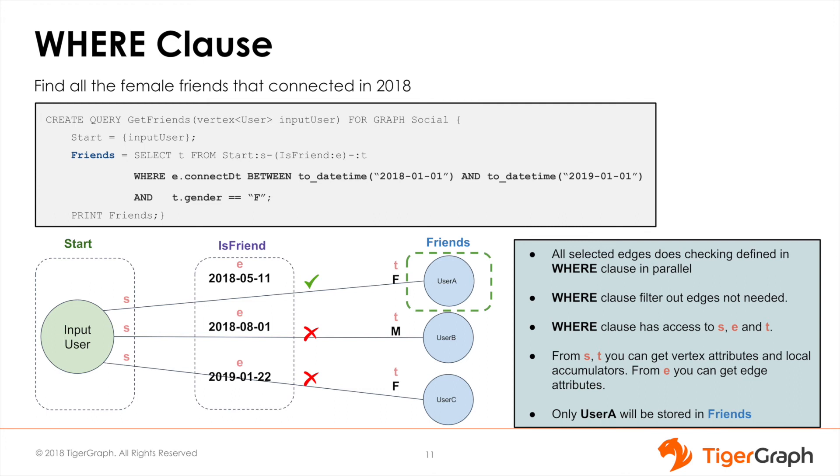Since the WHERE clause works on each selected edge, it has access not only to the edges but also the source and target vertices. Here in our new example, the highlighted WHERE clause checks for two conditions.